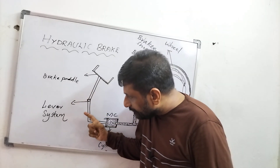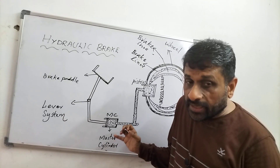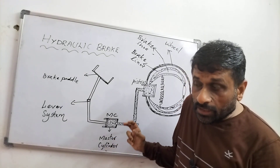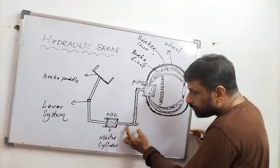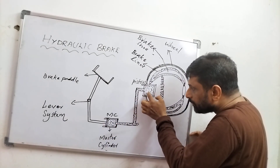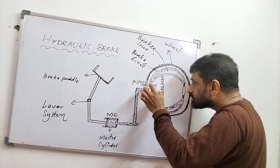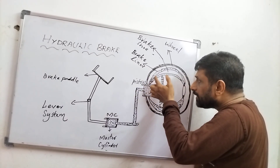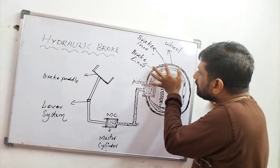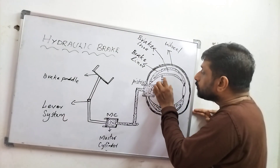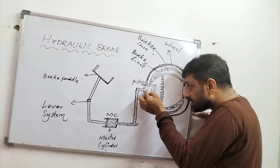This is the brake pedal, this is the lever system, and this is the master cylinder. The master cylinder contains the brake fluid — they are the liquid. The pressure is transmitted through the liquid, producing a large force. The brake shoe is at the back end of the wheel.